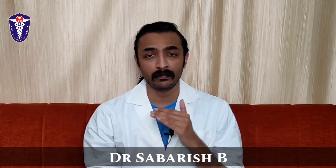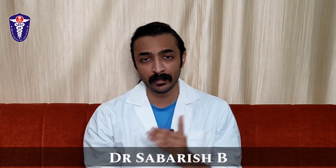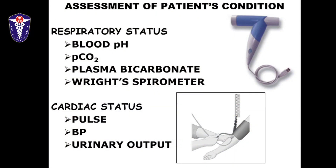Moving on to further assessments, you have to assess the respiratory system. The adjuvants to the respiratory system usually include measurement of blood pH, PCO2 level, and bicarbonate level. Usually these three values are obtained with blood gas analysis. So you get the pH level, the PCO2 level, and the bicarbonate level.